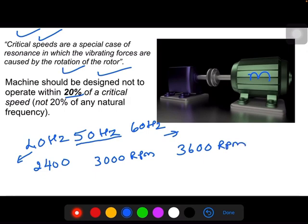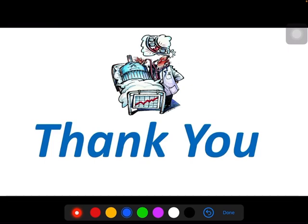If your machine has critical speed of 50 Hertz or 3000 RPM, then you should not run the motor between 2400 to 3600 RPM. It can be below 2400 and it can be more than 3600. If operating within this range, you get the resonance effect and catastrophic failure. Your machine should be designed such that it should not operate within this limit of frequency.